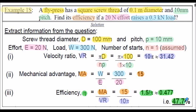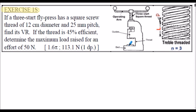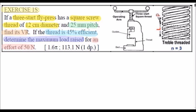Here's exercise 1S for you to attempt. A 3-start fly press has a square screw thread of 12 centimetres diameter and 25 millimetre pitch. Find the velocity ratio. If the thread is 45% efficient, determine the maximum load that can be raised for an applied effort of 50 newtons. I would encourage you to stop the presentation and attempt exercise 1S, but I'll show the full work solution on the following slides.